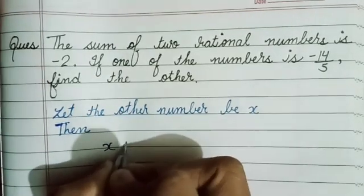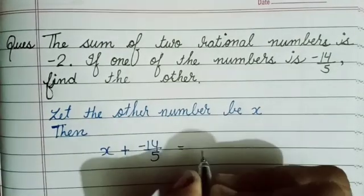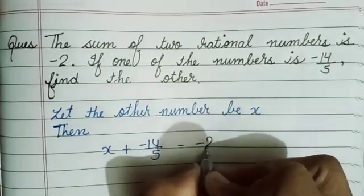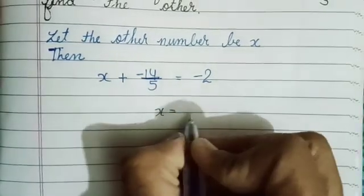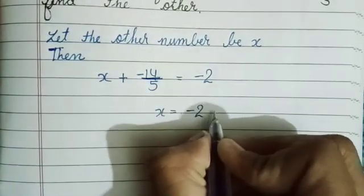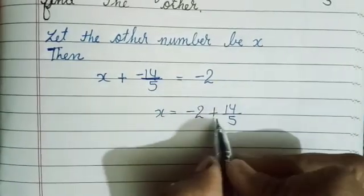Then x plus minus 14 upon 5 is equal to minus 2. Now x is equal to minus 2 plus 14 upon 5.